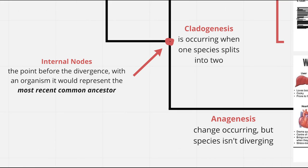When we reach an internal node, cladogenesis is occurring. The internal node represents the point before divergence. In a tree for an organism, this would represent the most recent common ancestor.